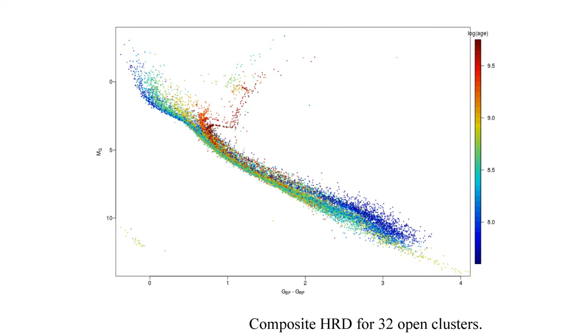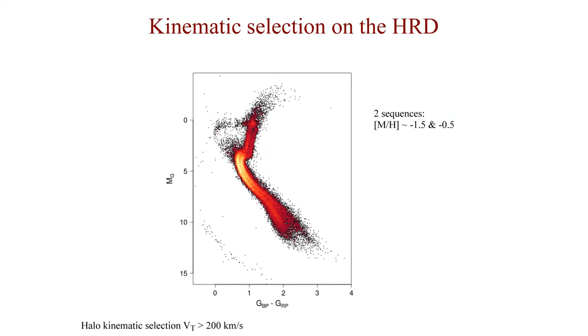The Gaia data are so extended that we can illustrate how the field HR diagram varies with kinematics, the younger stars having cooler kinematics, while the oldest ones have hotter kinematics.